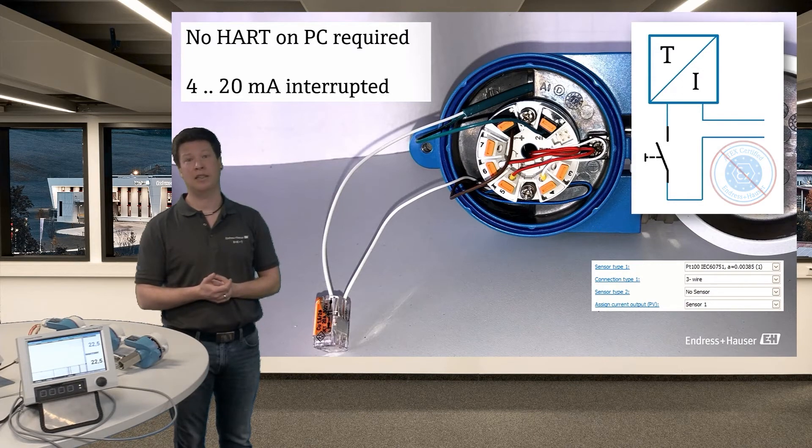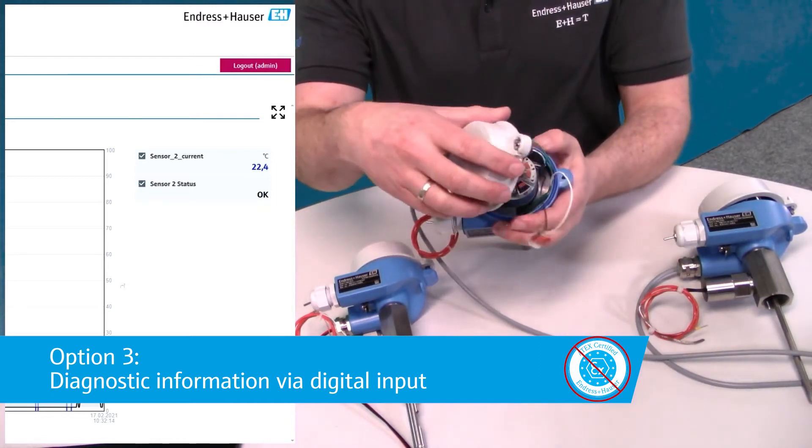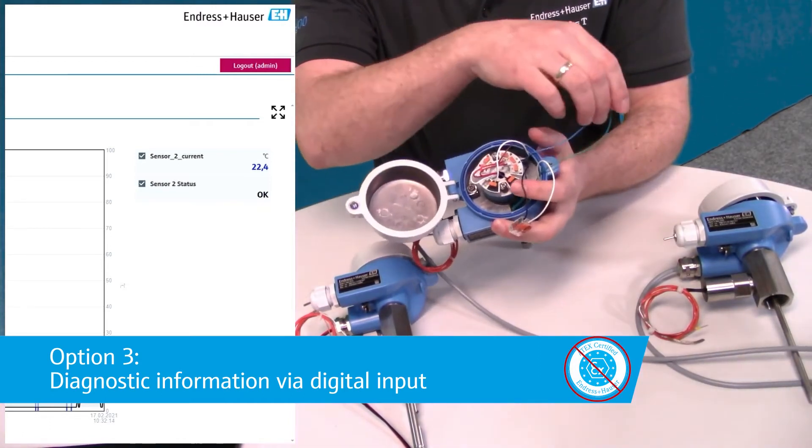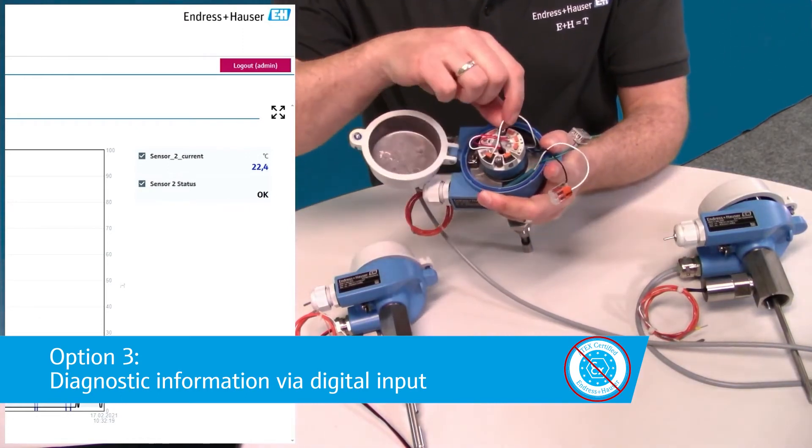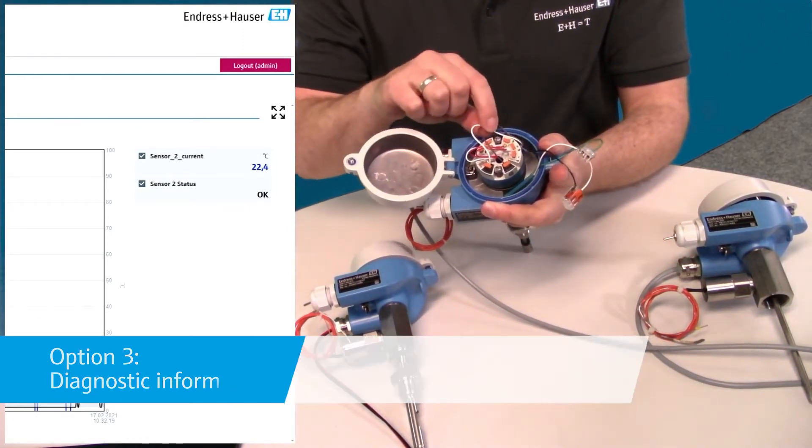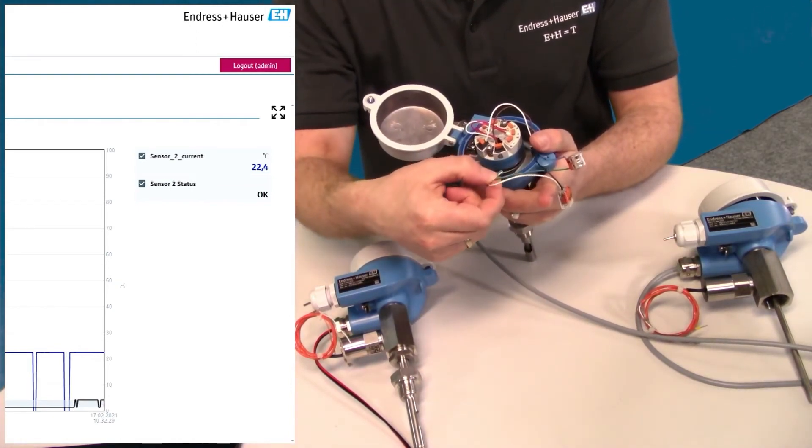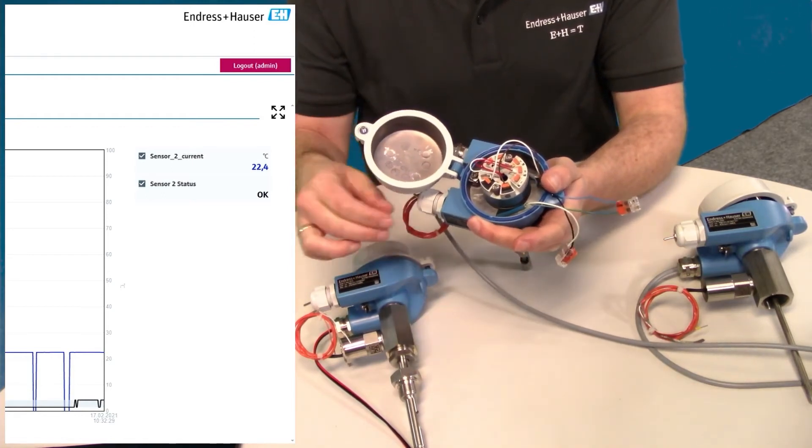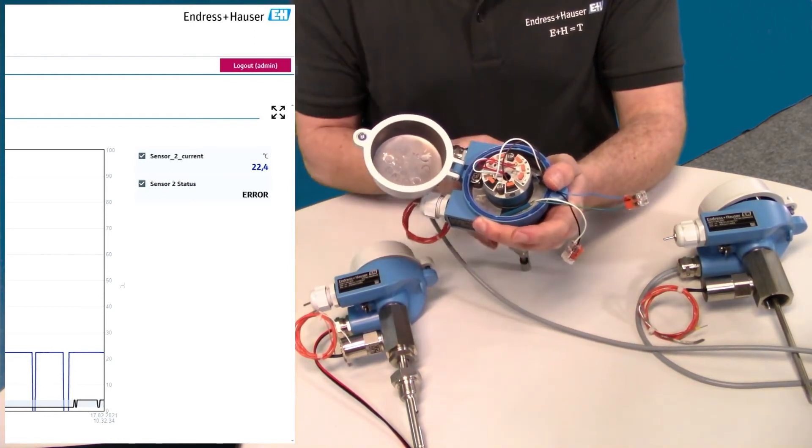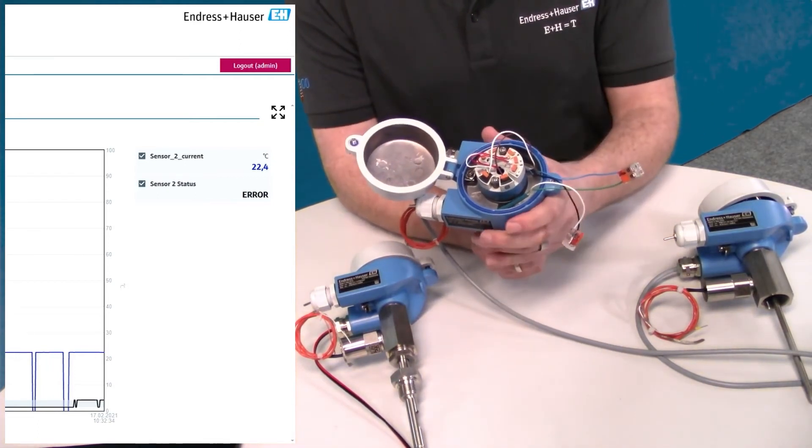Next option requires four wires from the PLC and a digital input. So now we have the 4 to 20 milliamp loop directly going to the PLC and two more wires going directly to the pressure switch. That means when the switch is activated the digital input on the PLC gets that warning signal.